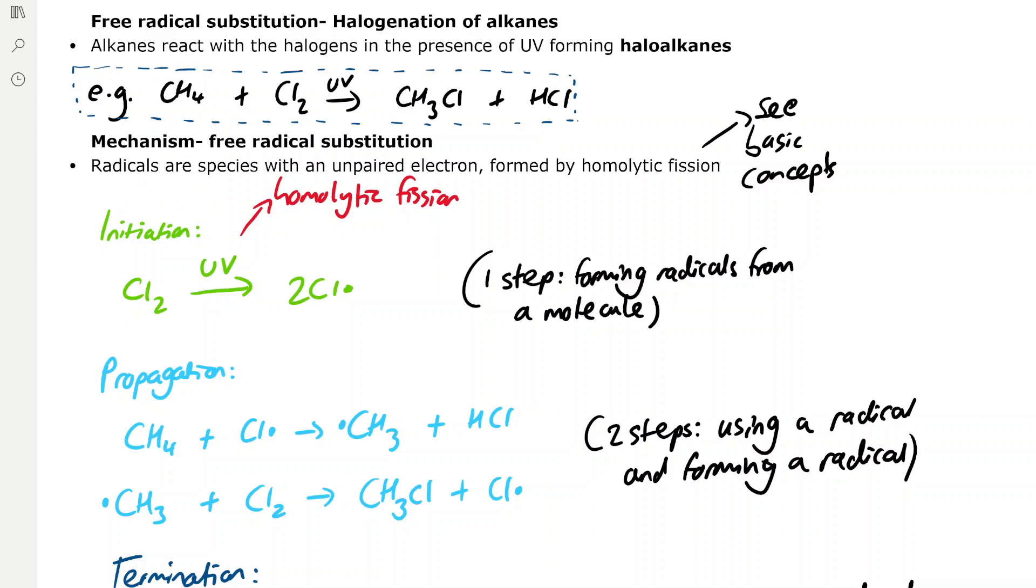In the initiation step we are forming radicals from a molecule. For example, chlorine in the presence of ultraviolet radiation forms chloride radicals by homolytic fission, and these chloride radicals go on to react in the propagation step.